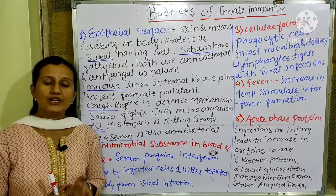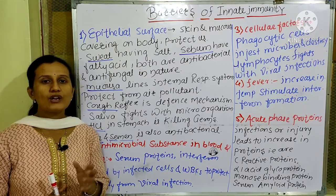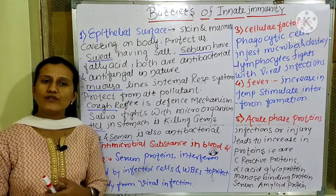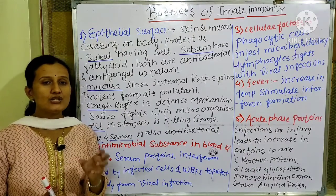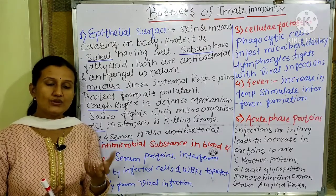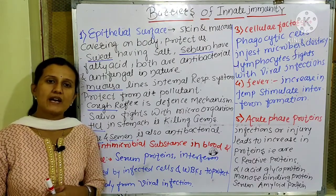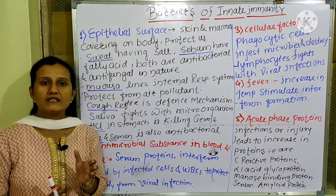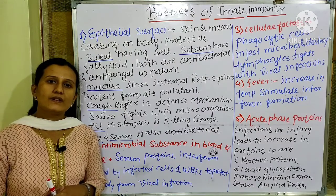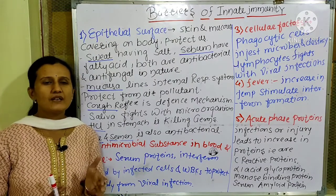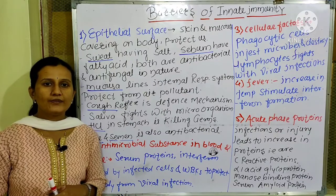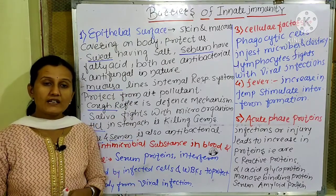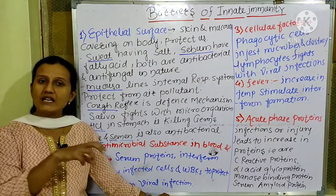Innate immunity is an inborn immunity which is present before birth — when we are in the form of an embryo or fetus — and it is due to our hereditary material from our parents, from our mother and father. That is innate immunity. It is non-specific and is not affected by any external factors.